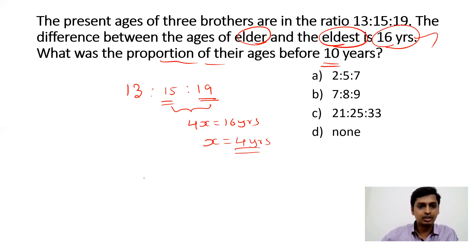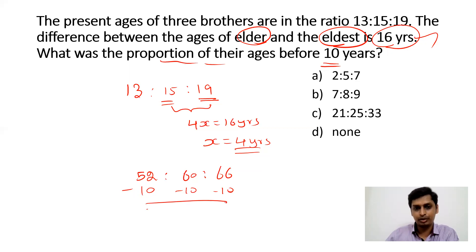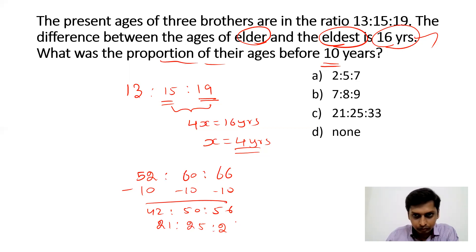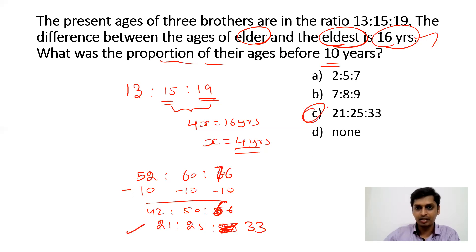If 1 part = 4 years, then 13 parts = 52, 15 parts = 60, and 19 parts = 76. Subtracting 10 years from each gives 42, 50, and 66. So the ratio before 10 years is 42:50:66, which simplifies to 21:25:33. This is our answer.